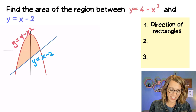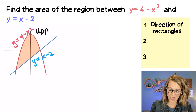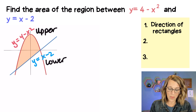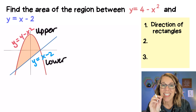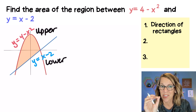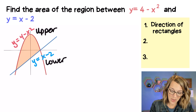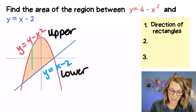In this case I definitely have an upper which is going to be that parabola and I have a lower which is going to be that line. So if I want to draw in a sample rectangle — and we're going to use rectangles the same way that we used to find the area under a single curve — I'm going to draw it from my upper curve down to my lower curve.